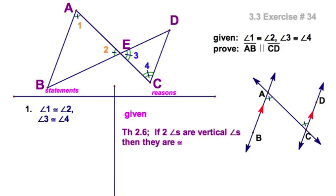So if two angles are vertical, they're congruent, therefore two is congruent to three. Now one is congruent to two, two is congruent to three, three is congruent to four.